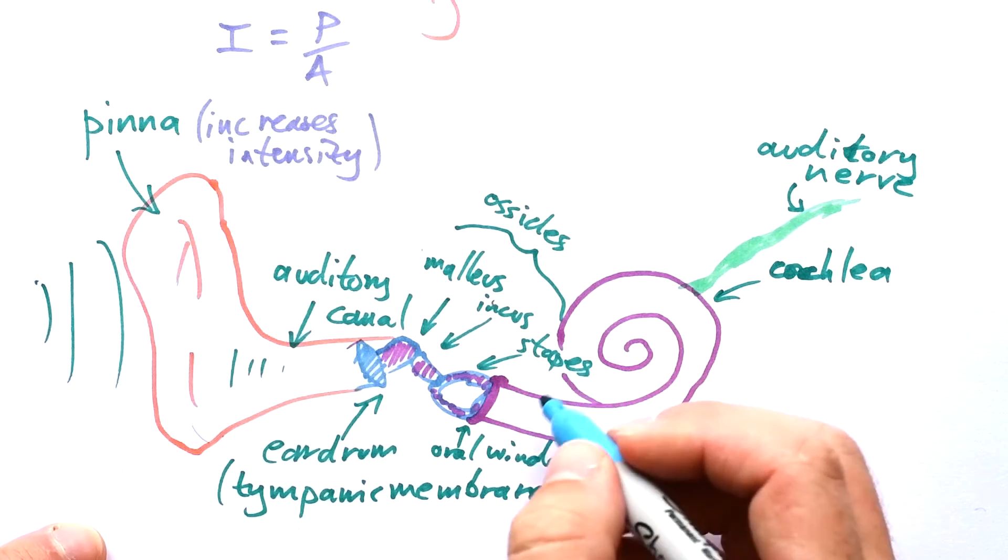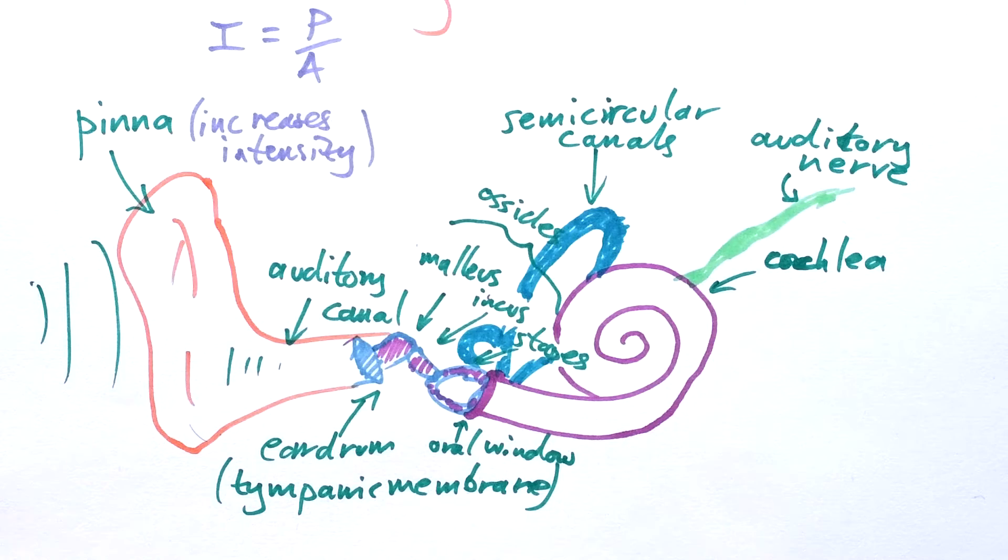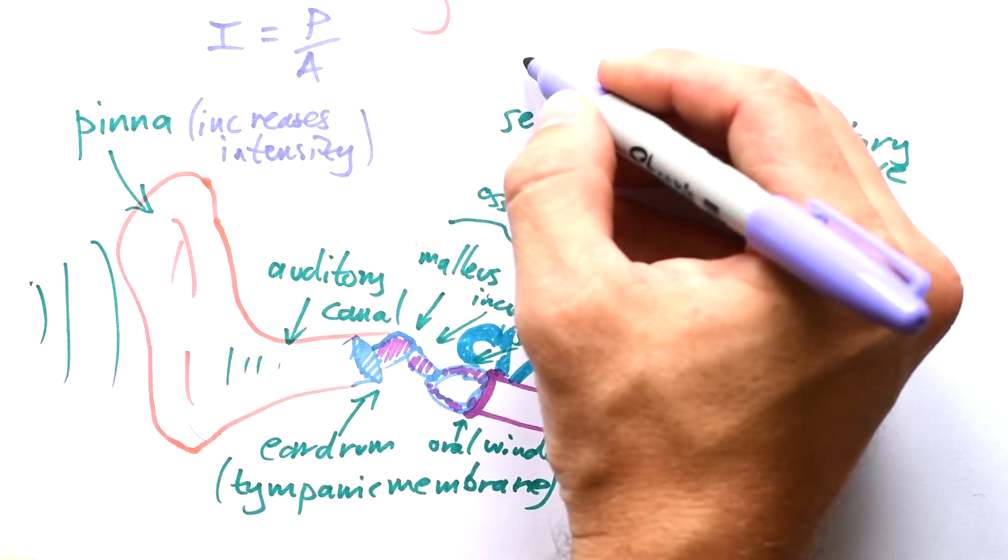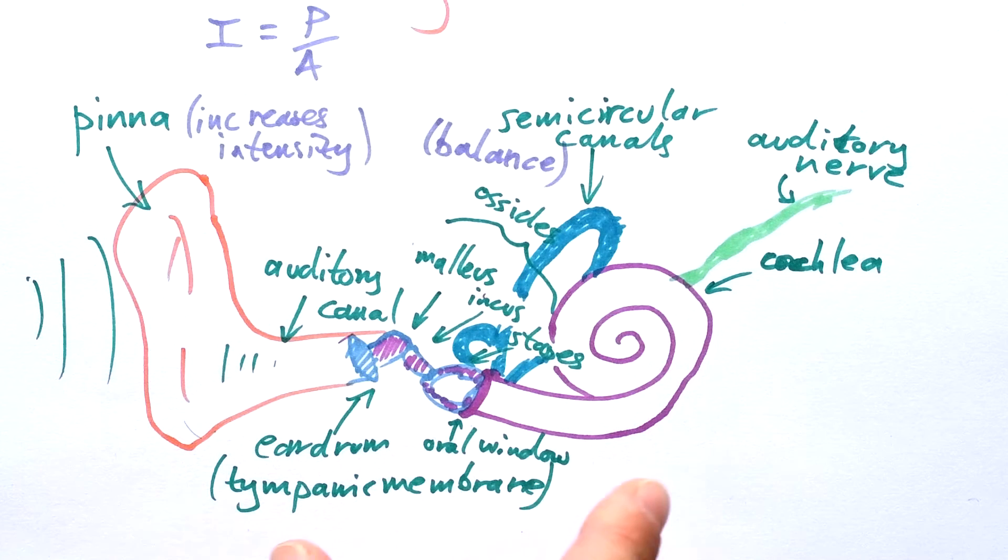We have something extra as well, semi-circular canals. Now the semi-circular canals, they're needed for balance. So here we have the outer ear with the pinna and the auditory canal. The eardrum separates that from the middle ear which is where we have our ossicles. And then past that with the cochlea and the semi-circular canals and the auditory nerve, that's the inner ear.